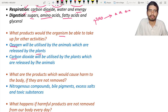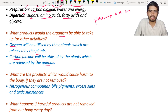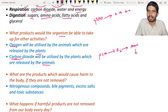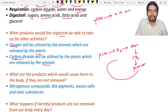Plants release oxygen, which is taken by animals. Animals give out carbon dioxide, which is taken by plants, and this cycle repeats. So there is a continuous exchange of gases between plants and animals.